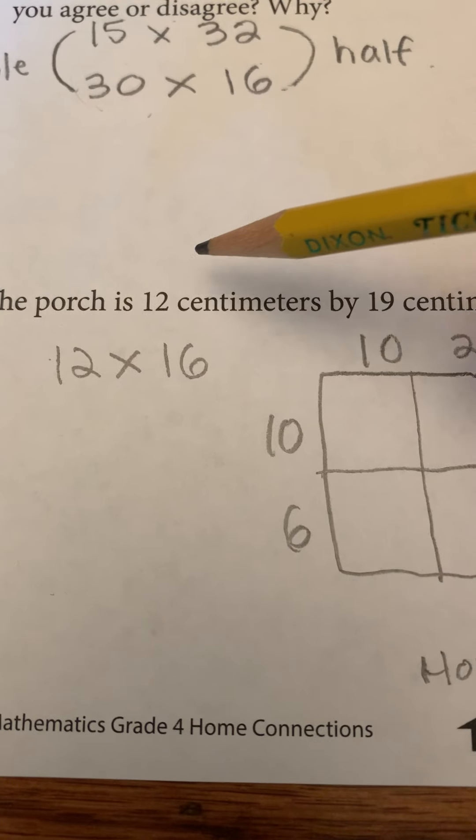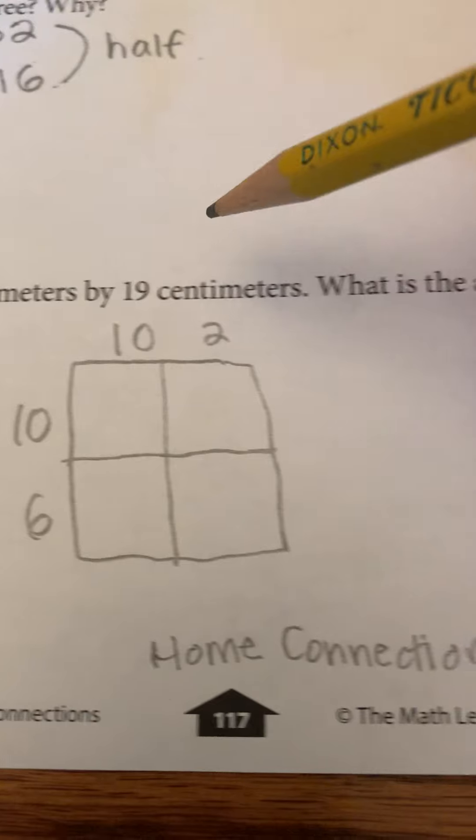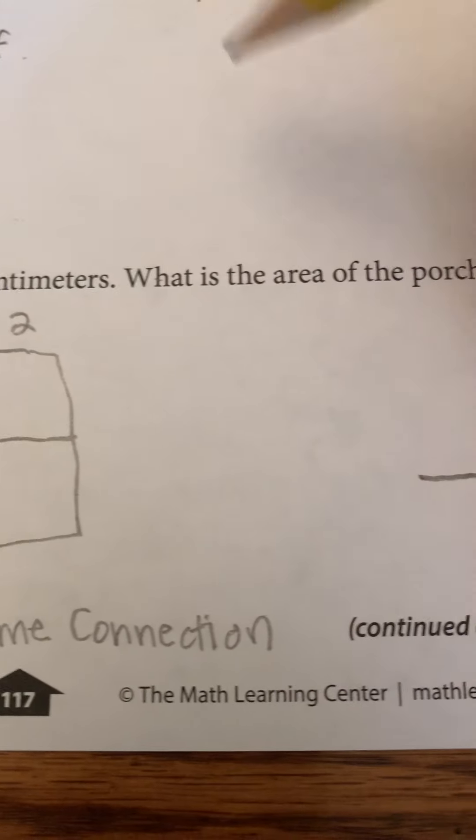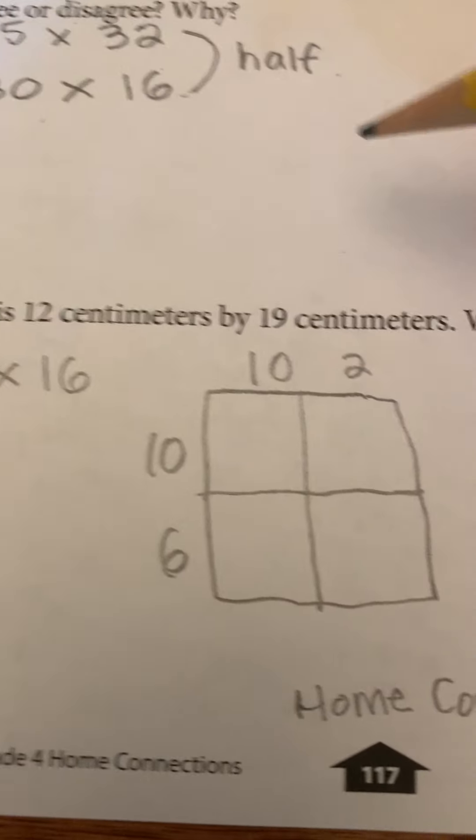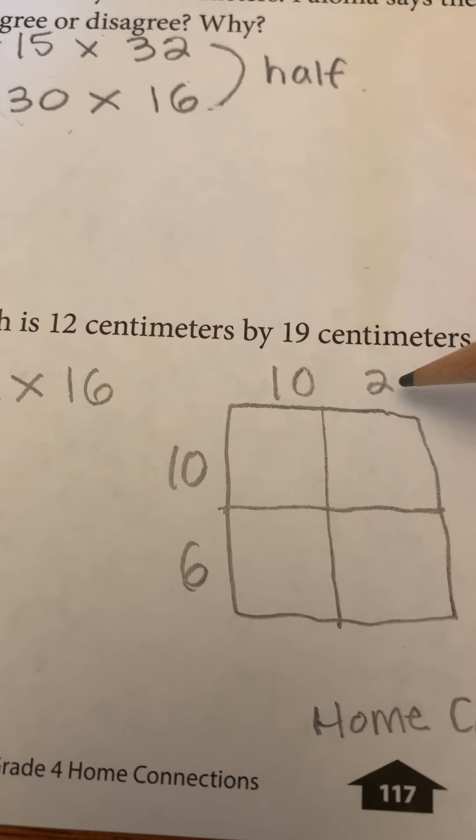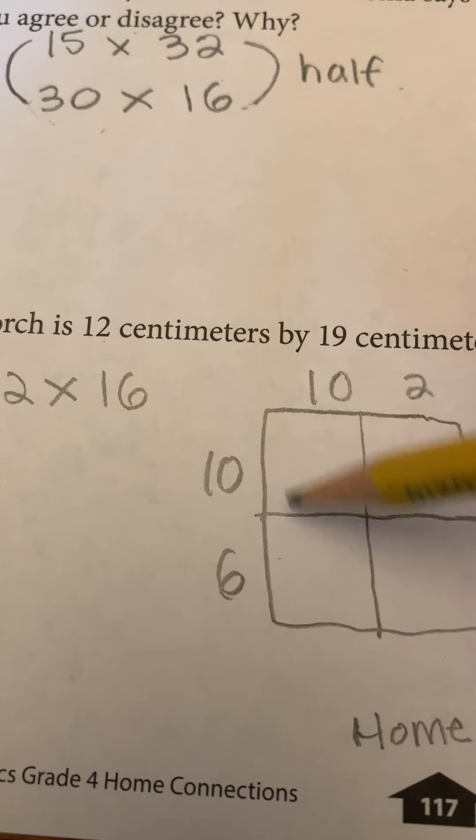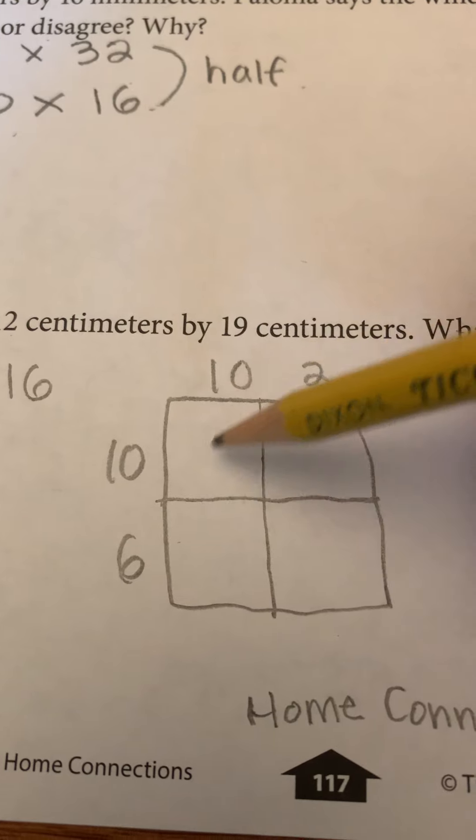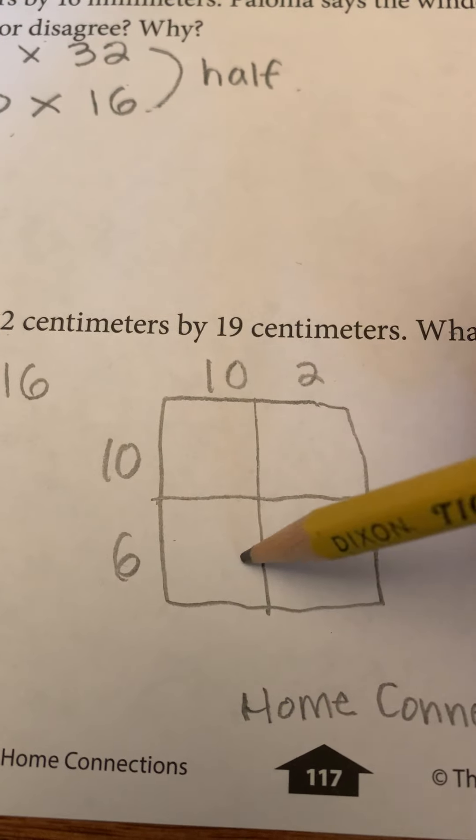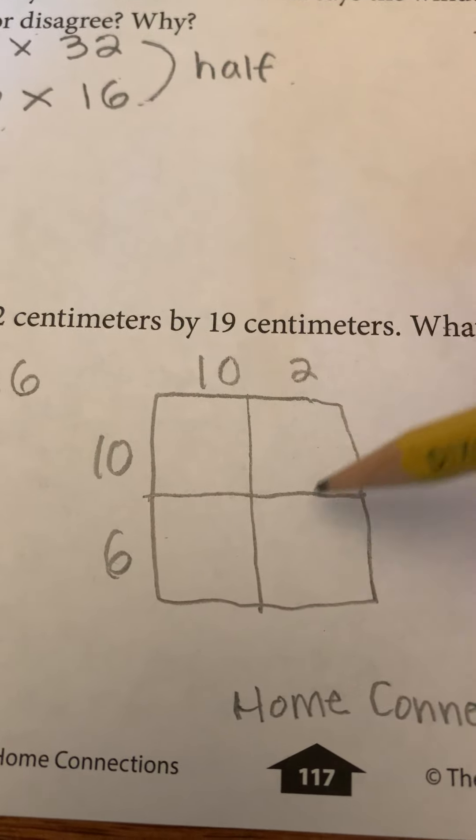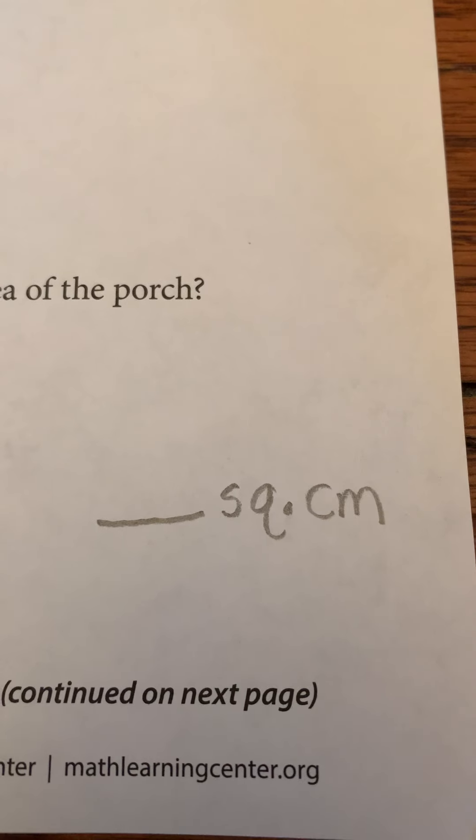A porch, 12 centimeters by 19 centimeters. What's the area of the porch? So, 10 and 2 is 12, 10 and 6 is 16. Do all the parts: 10 times 10, 10 times 6, 2 times 10, 2 times 6. Add all your parts together and make sure you label it.